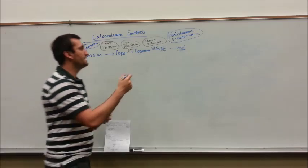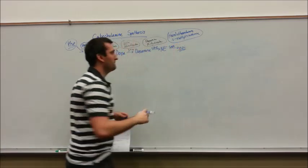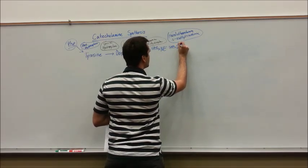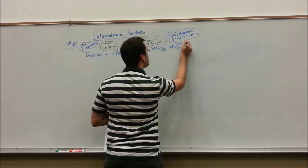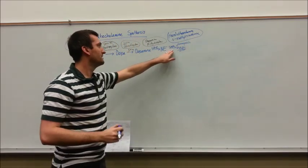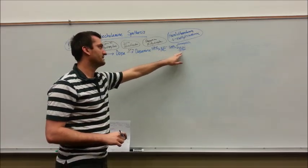Also, you're going to need SAM, which is going to be a methyl donor, and then it's going to spit out a homocysteine as a result. So you're going to need SAM, a methyl donor group, to create norepinephrine to epinephrine.